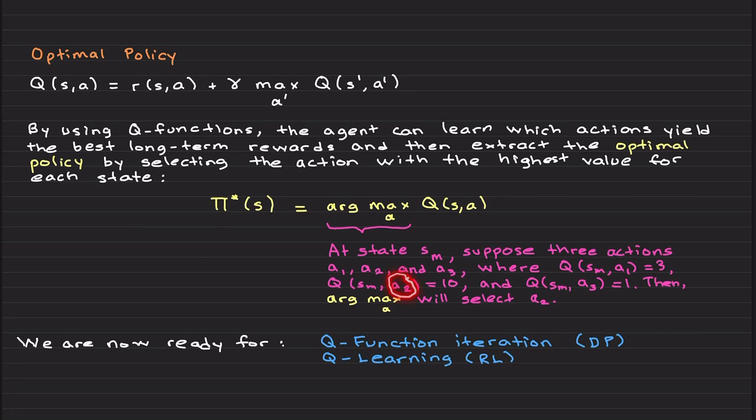Because this action a2 is the one that causes the highest reward. So it is slightly different than max. Argument max chooses the action, max chooses the highest value.